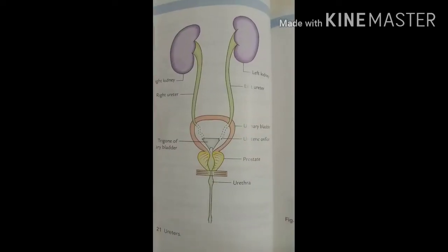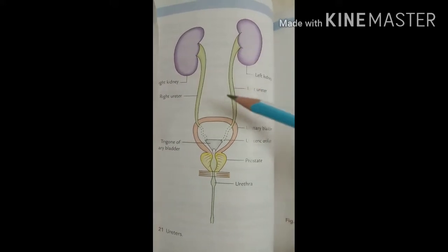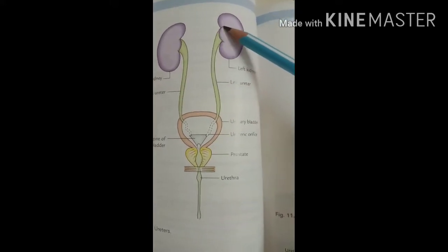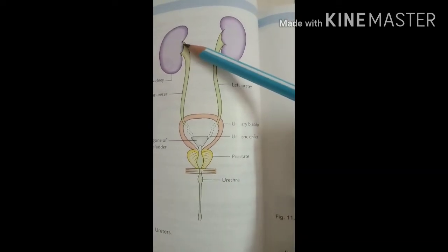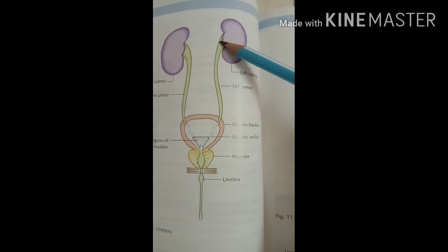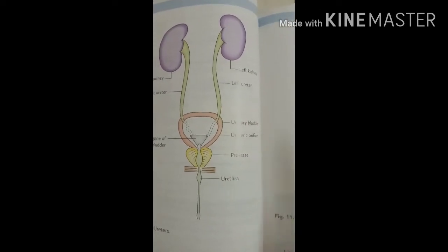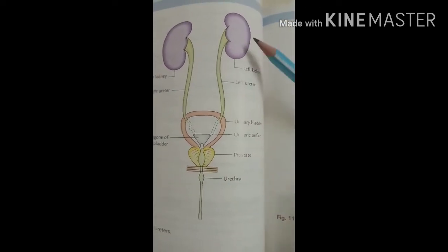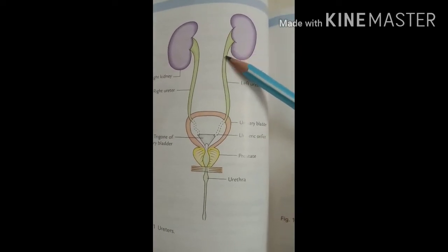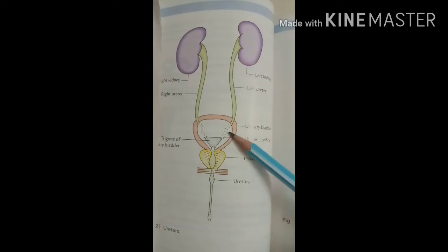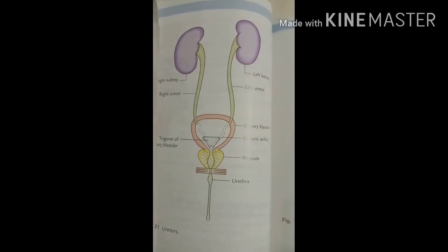Now we will look at the measurements, which include the length, thickness, and lumen of the ureter. As seen in this diagram, the ureter starts from the renal sinus, comes out from the kidney, goes downwards, and then enters into the urinary bladder. The length of the ureter — from the renal sinus to the urinary bladder — is 25 centimeters, or 10 inches.